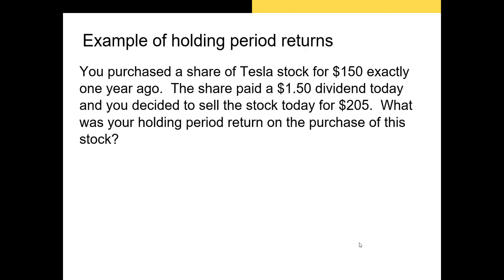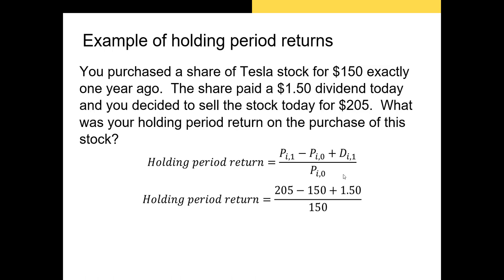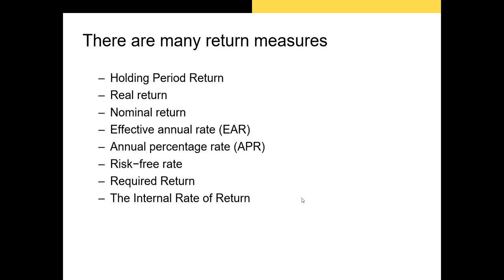Let's try an example of holding period returns. You purchased a share of Tesla stock for $150 exactly one year ago. The share paid a $1.50 dividend today, and you decided to sell the stock today for $205. What was your holding period return? We know that at the beginning of the period we bought Tesla stock for $150. We're selling for $205, and our $1.50 dividend goes at the back of the numerator. Using the holding period return formula, we find a holding period return of 37.67%.